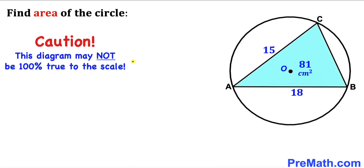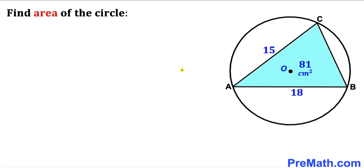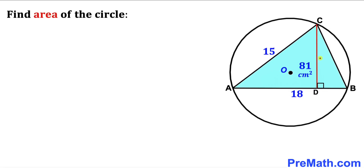Please keep in mind that this figure may not be 100% true to scale. Let's go ahead and get started. I have dropped a perpendicular CD on line AB. Let me label this perpendicular CD as lowercase h, where h stands for the height of this blue triangle.